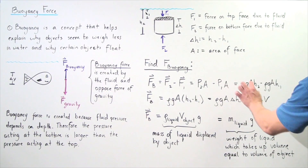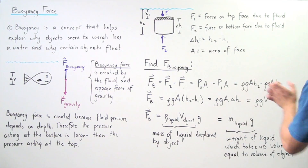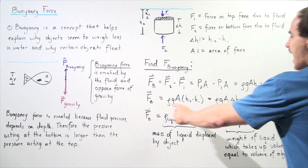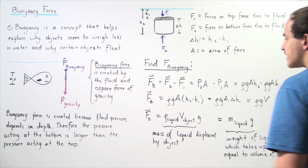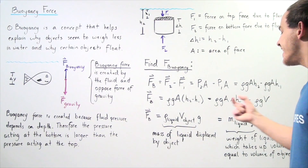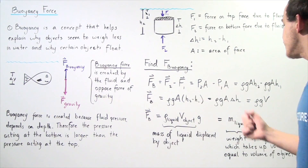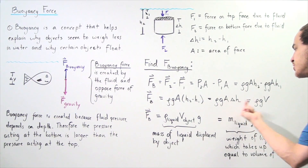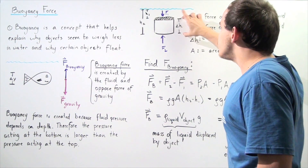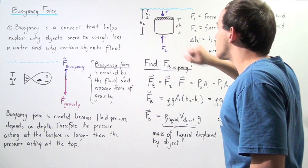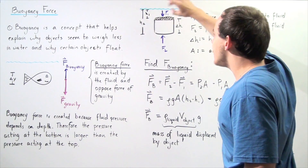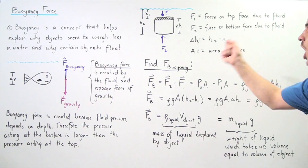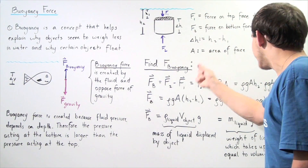Notice that density, g, and A are all the same quantities appearing on both sides, so we factor them out to get FB = ρ·g·A·(H2 − H1). Since H2 minus H1 is simply delta-H, we get FB = ρ·g·A·ΔH. Now notice what A times ΔH represents: ΔH is the height of the cylinder, and cross-sectional area A multiplied by the height simply gives us the volume of the object.